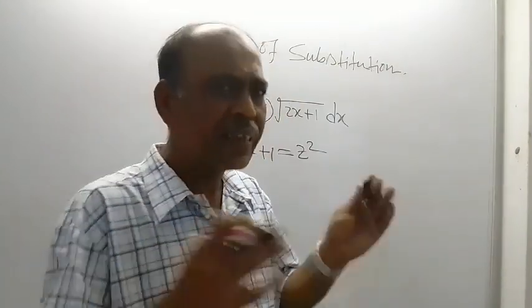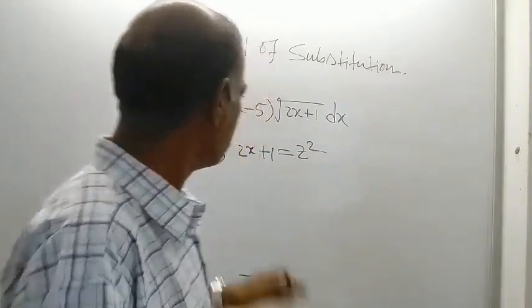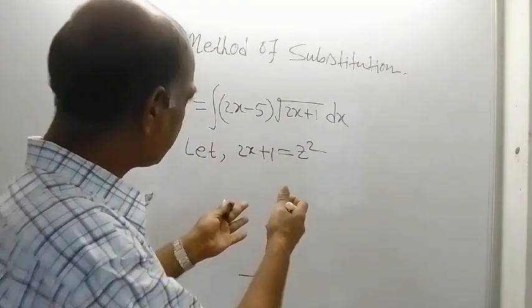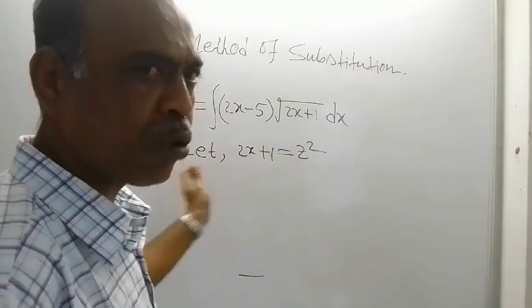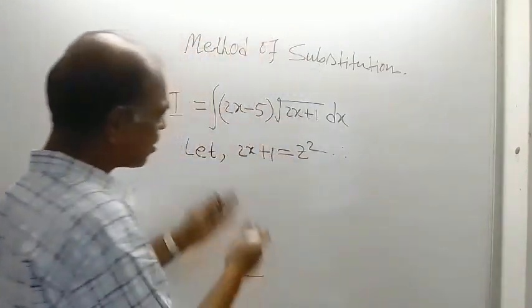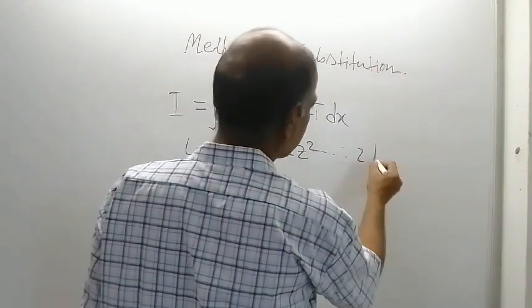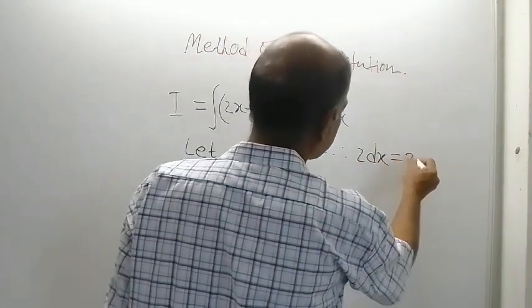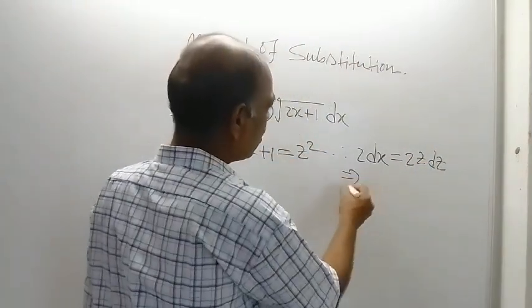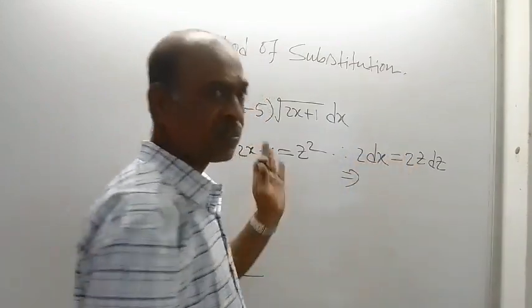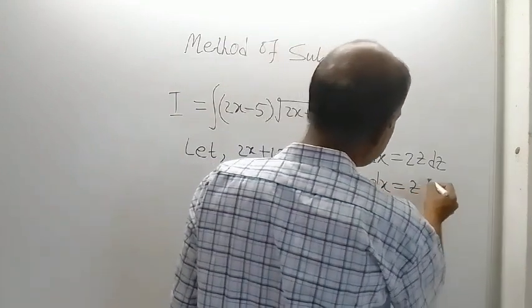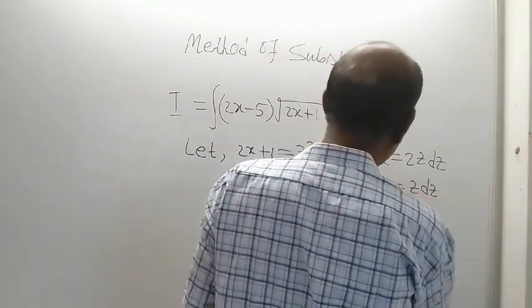After making this substitution, you have to differentiate both sides. On differentiation, the left side gives 2dx and the right side gives 2z dz. From here, 2 and 2 cancel, and we get dx equal to z dz.